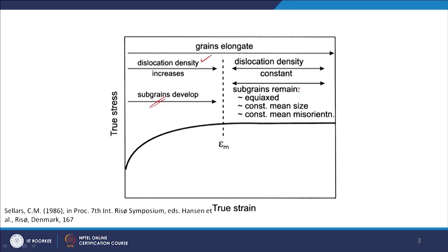In the steady state, subgrains also remain equiaxed, more or less, with constant mean size and constant mean misorientation. There is not much change in the microstructure either — it has reached a steady state condition. When you have this kind of condition, the dynamic recovery process is the prominent process.